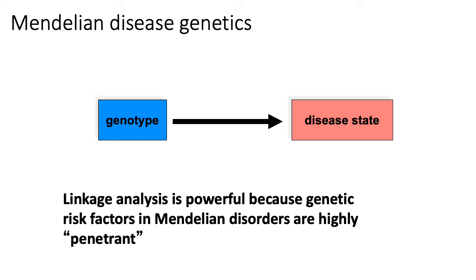This is in contrast to polygenic traits, which are controlled and driven by many genes. In Mendelian disorders, genetic risk factors are highly penetrant. Penetrance basically refers to the fraction of individuals who have a genetic variant and also exhibit the phenotype that you're studying. If you have high penetrance, that means every time you see this particular variant, you'll oftentimes see the corresponding phenotype that you're looking for.